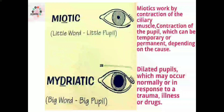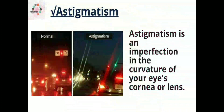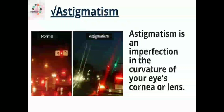Next we have astigmatism, seen in the picture — an imperfection in the curvature of your eye's cornea or lens.